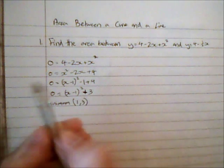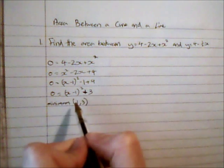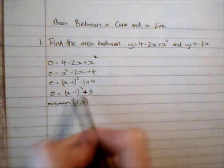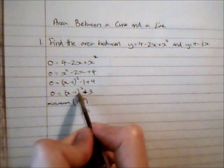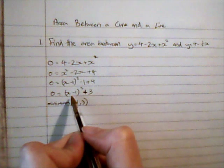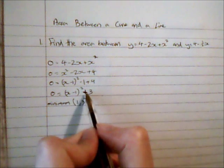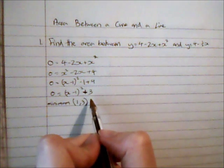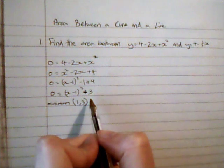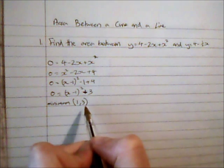And the reason I know that is if I consider this as a transformation of the curve y equals x squared. Well it's 1 subtracted from the x coordinate which means it's translated 1 to the right. And then it's plus 3 afterwards which means it's translated 3 up on the y axis. So that's the minimum and I'm also going to find where it intersects the y axis.